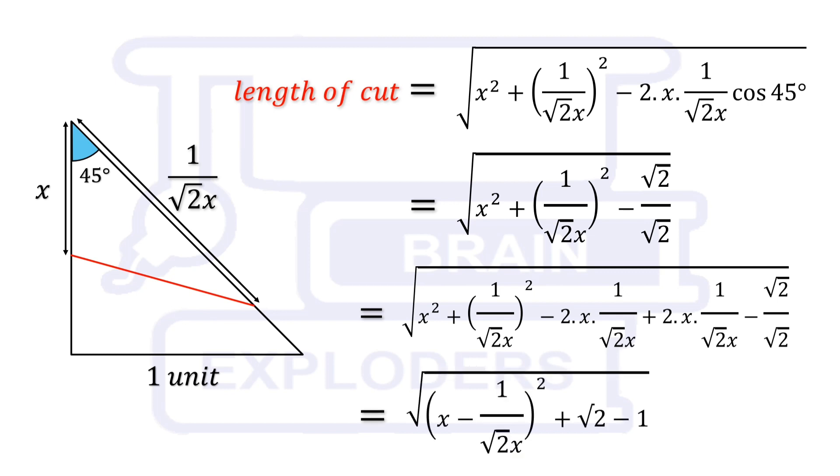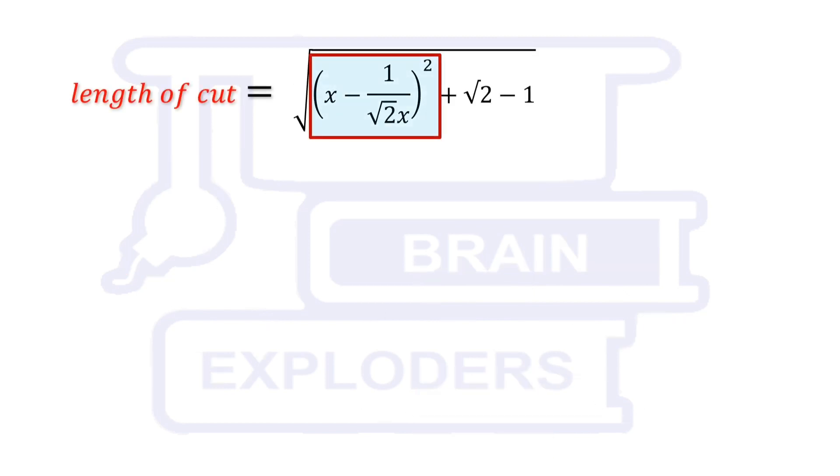Now, we have square of a real number plus root 2 minus 1. We know that square of a real number is always a non-negative number. Therefore, in order to minimize it, we should choose such a value of x that this square becomes 0.